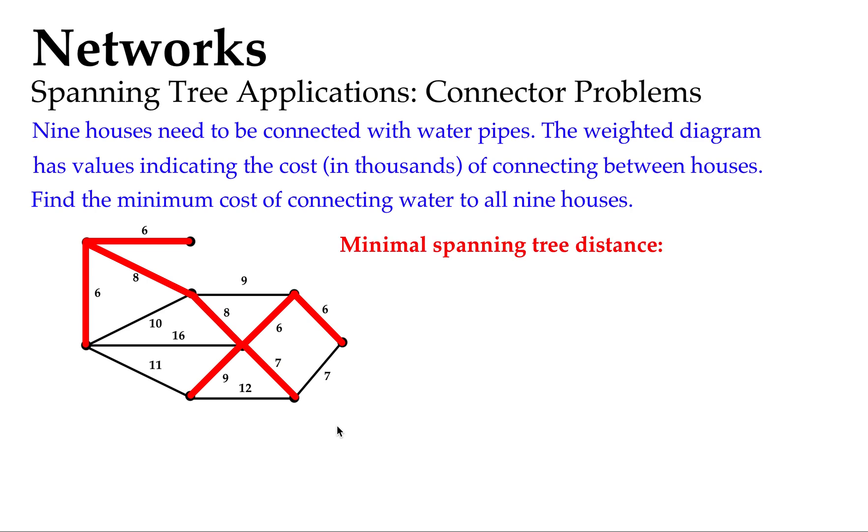Now I can figure out that minimal spanning tree distance by simply adding up all those numbers. Our 6 and our 6 and our 8 and our 8 and our other 6 and our other 6 and our 7 and our 9 all add up to 56. Now I said at the beginning in the question that those numbers, those weightings on those edges indicate a cost in thousands of connecting between the houses.